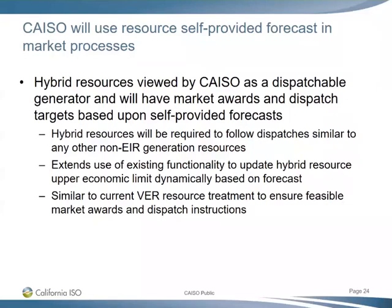Michael from PG&E asked whether the units of the forecasts are megawatts or megawatt hours, and if megawatt hours, over what duration. Chris said the intent is that forecasts would be in megawatts, like a traditional dispatchable generator. However, the ISO still needs to consider whether resources modeled as NGR resources would also include megawatt hour and state of charge type discussions, or whether all resources should simply provide a megawatt forecast similar to a traditional VR resource.